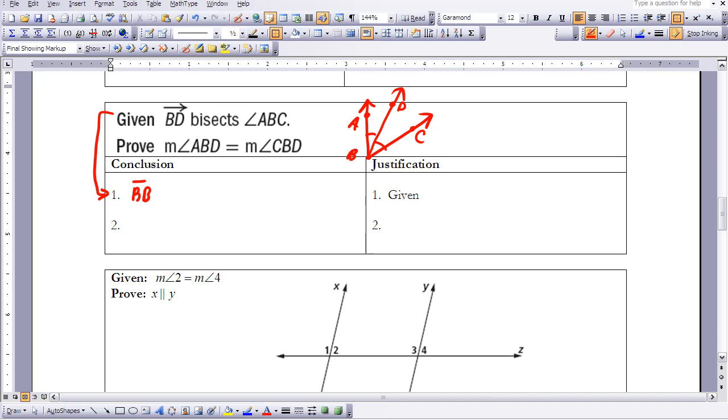BD bisects angle ABC. Because of the definition of an angle bisector—make sure you get the angle symbol in there—I can say that my two angles are equal. Angle ABD and angle DBC, or CBD, are equal. So the measure of angle ABD equals the measure of angle CBD. That was a quick proof.